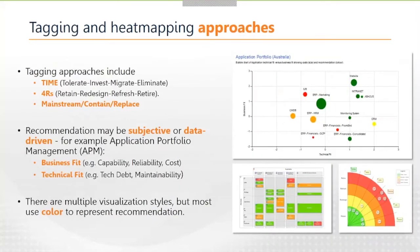When it comes to determining those heat maps, there are a few standard tagging approaches. Some common ones are the TIME ratings — Tolerate, Invest, Migrate, Eliminate; the Four Rs — Retain, Redesign, Refresh, Retire; or Mainstream, Contain, Replace. These are different ways of describing what the intent is for each of those applications, processes, or technologies. How you come up with those tags can be either subjective — simply getting business experts or technical experts in a room to give a rating — or you may take a more data-driven approach.